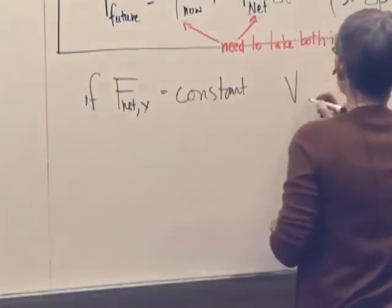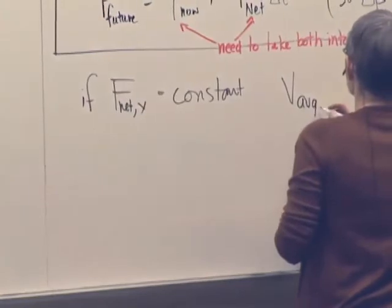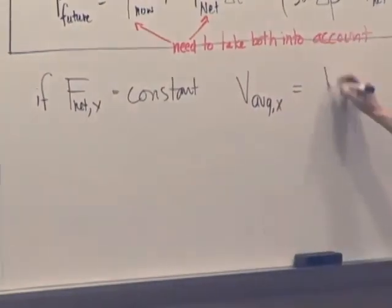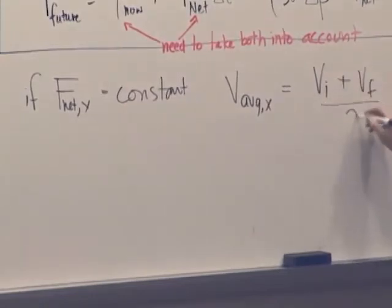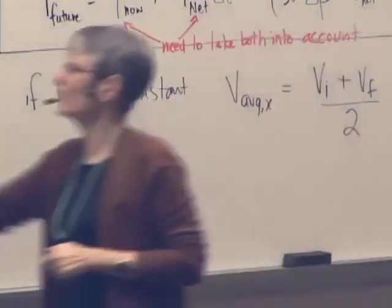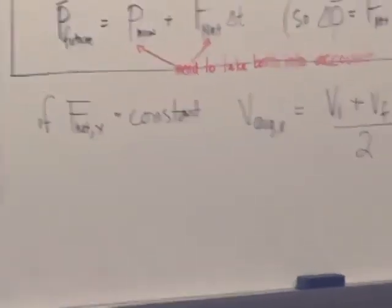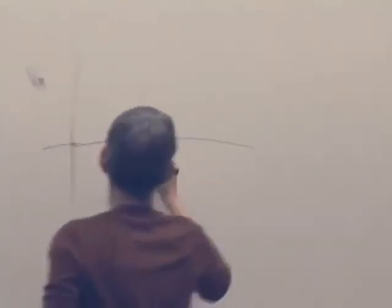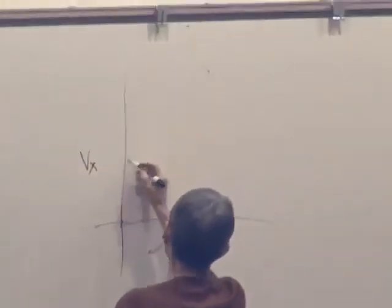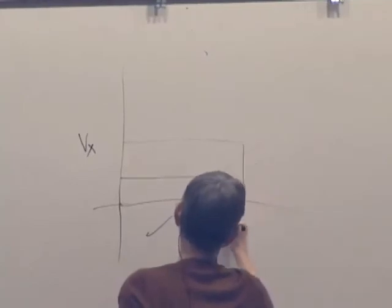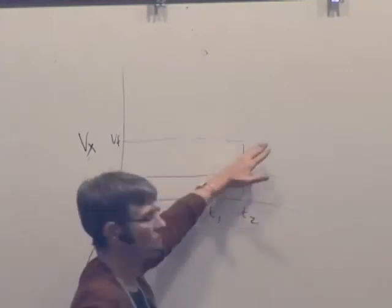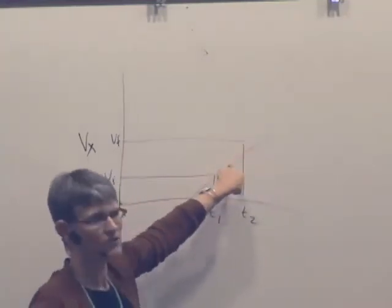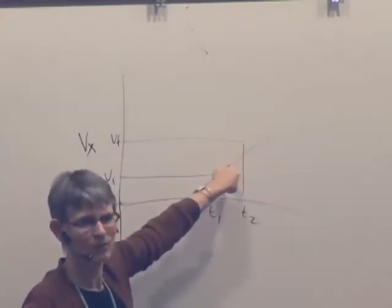Then the average x is truly the average of the initial plus the final over 2 for some interval. And again, that's because we have this graph of v sub x versus t. And if we take some interval t1, t2, the initial, the final, because it's increasing linearly, the average is in fact going to give you a reasonable average.